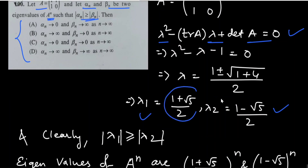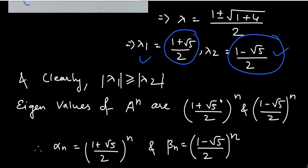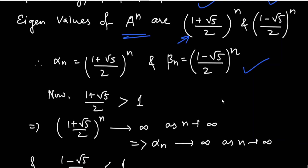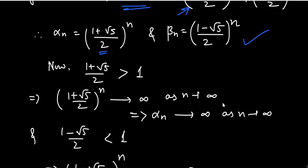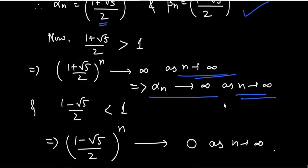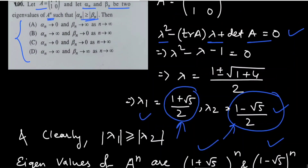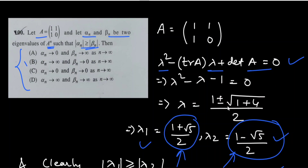Since λ₁ > λ₂, the eigenvalues of A^n are α_n = ((1+√5)/2)^n and β_n = ((1−√5)/2)^n. Since (1+√5)/2 > 1, α_n → ∞ as n → ∞. Since (1−√5)/2 has absolute value less than 1, β_n → 0 as n → ∞. Therefore option B is correct.